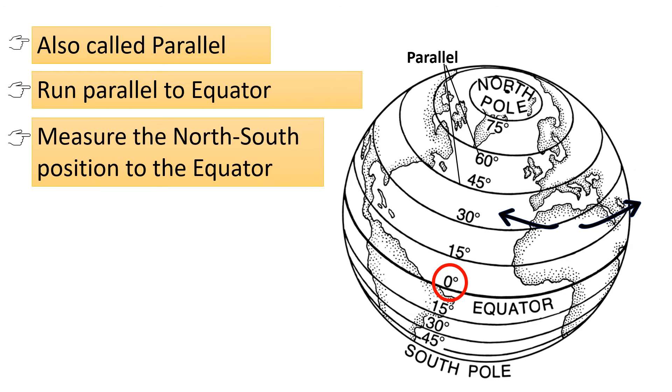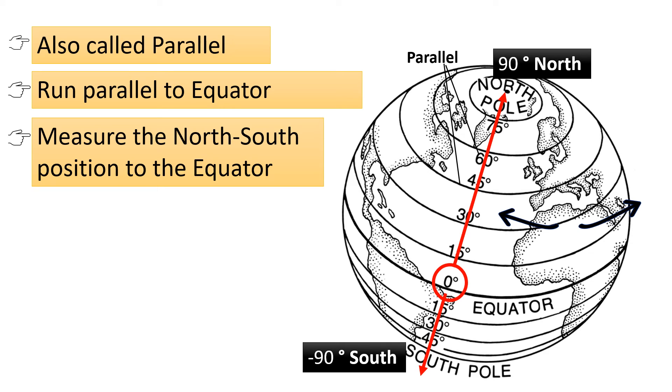They measure the north-south position of a point relative to the equator. The equator is zero degree latitude and serves as the starting point for measuring latitude. Latitudes increase northward to 90 degrees at the North Pole and southward to minus 90 degrees at the South Pole.